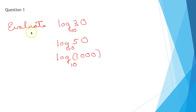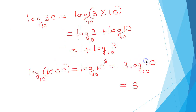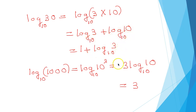Coming to Question 1: evaluate log 30 to the base 10, log 50 to the base 10, and log 1000 to the base 10. Log 30 to the base 10 is log of 3 times 10 to the base 10, that is log 3 to the base 10 plus log 10 to the base 10. Since log 10 to the base 10 is 1, this equals 1 plus log 3 to the base 10.